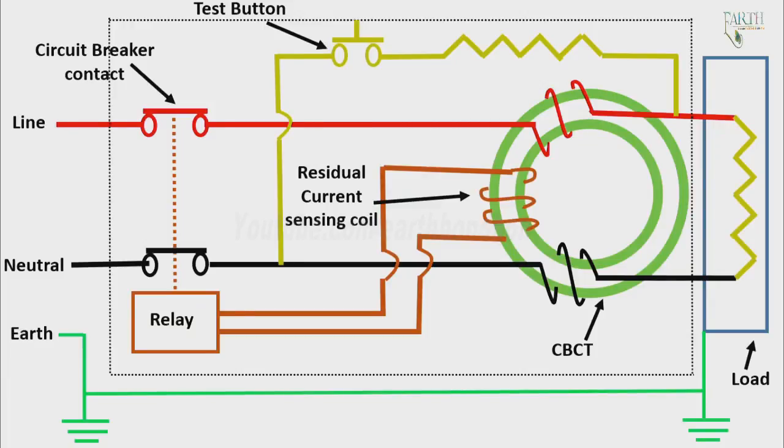To prevent such hazardous conditions, you can see the basic circuit diagram of ELCB. This section is the ELCB portion. It consists of a circuit breaker, relay, and the core balance current transformer, which is also called a CBCT. This is the test button by pressing which you can check whether the ELCB is working.